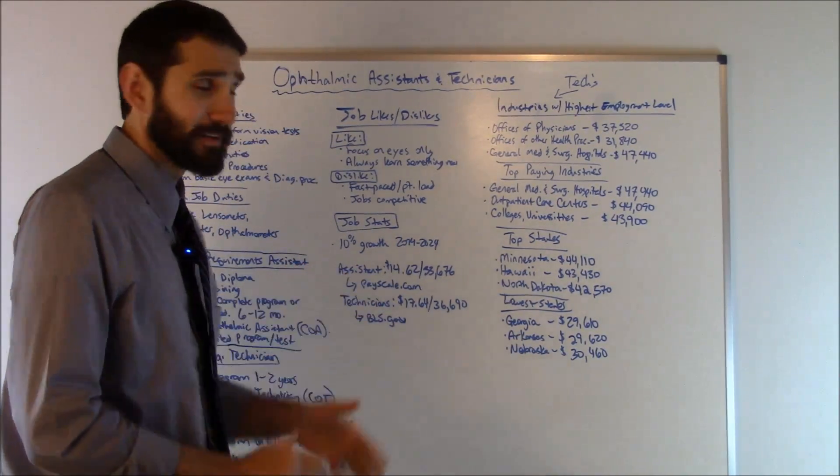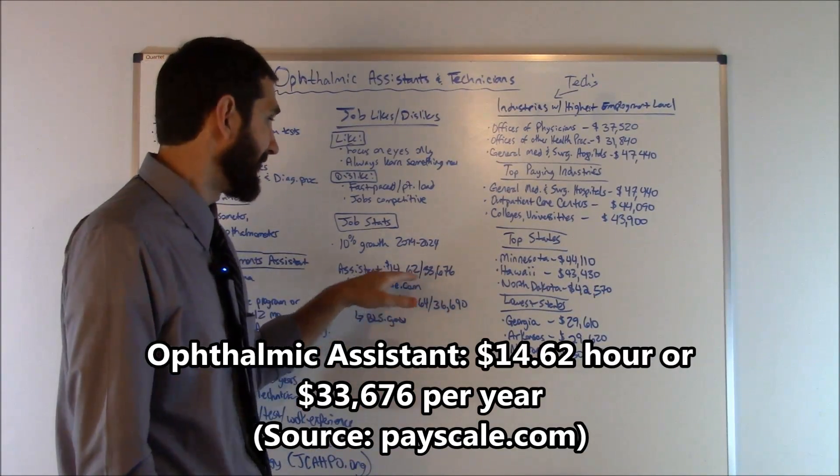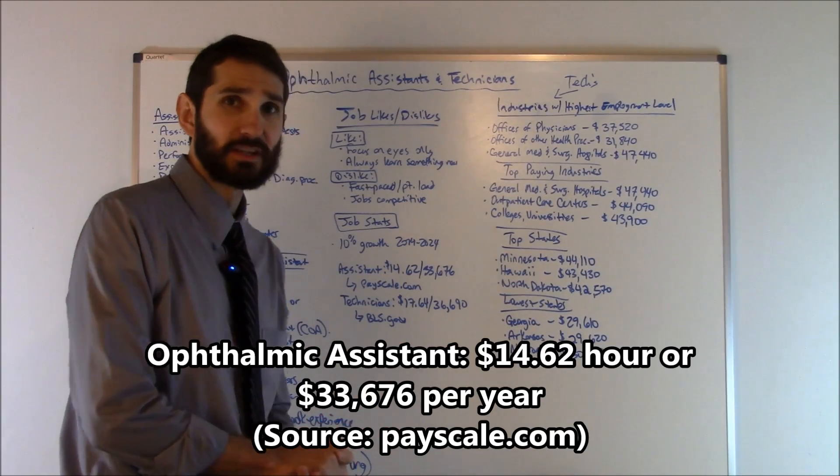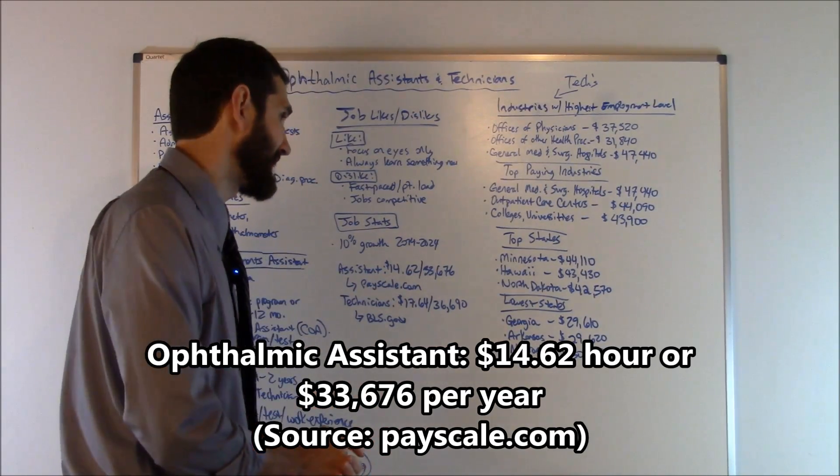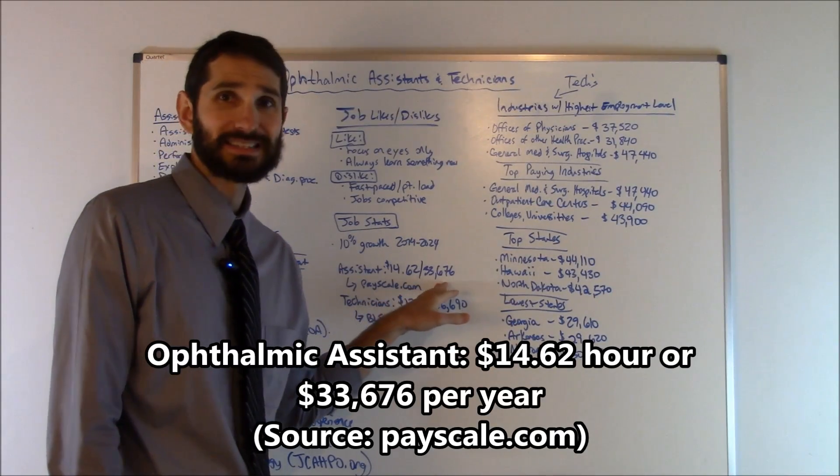Now, how much money do these individuals make? For an ophthalmic assistant, according to Payscale.com, the average hourly wage was $14.62 in the United States. The median salary was $33,676.